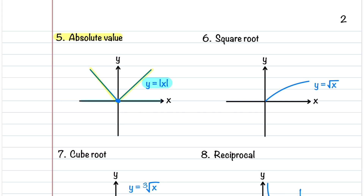The sixth function is the square root function, described by the equation y = √x. It's defined only for x greater than or equal to zero, and the graph of this function increases gradually as you go toward the right.